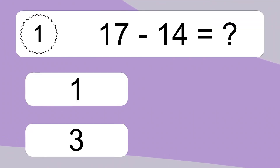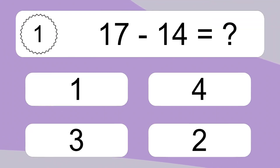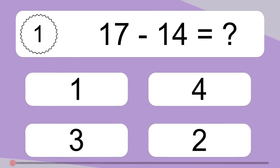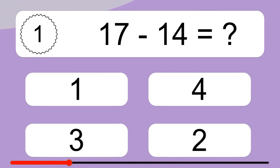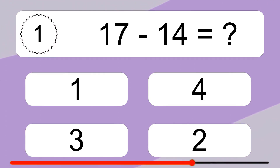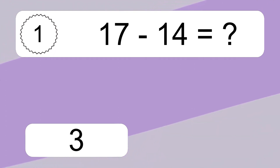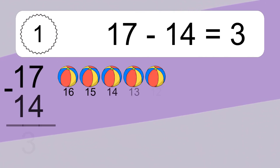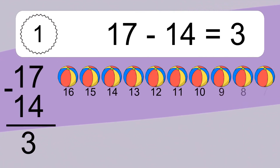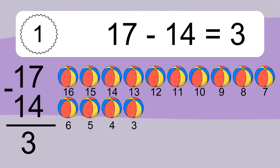17 minus 14 equals what? 17 minus 14 equals 3. Let's count it!